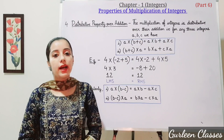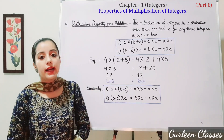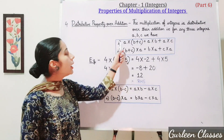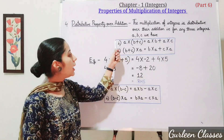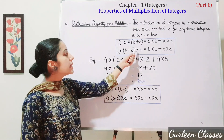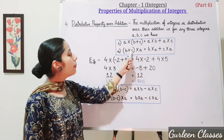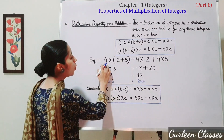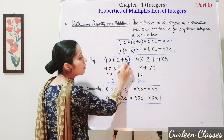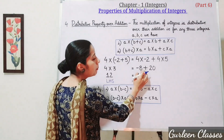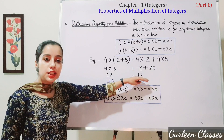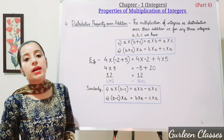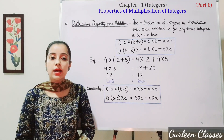Property 4: distributive property over addition. The multiplication of integers is distributive over their addition. For any three integers a, b, and c: a into (b plus c) equals a into b plus a into c; and (b plus c) into a equals b into a plus c into a. Example: 4 into (minus 2 plus 5) equals 4 into minus 2 plus 4 into 5, which gives minus 8 plus 20 equals 12. LHS: 4 into 3 equals 12. So LHS equals RHS — distributive property over addition.